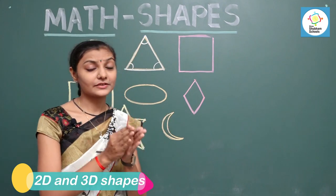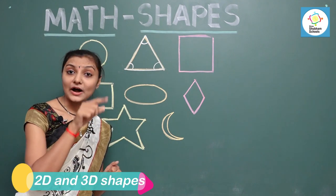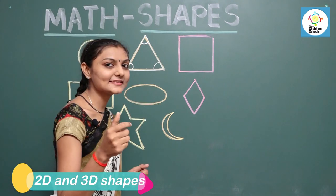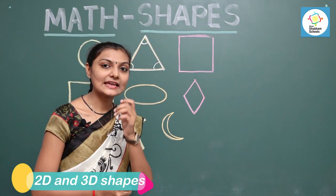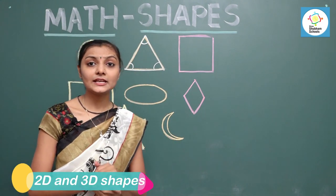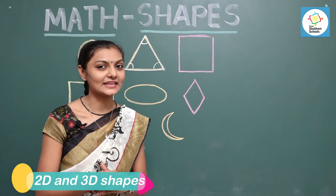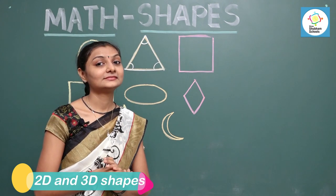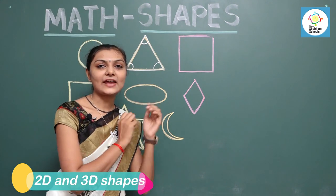There are many things which are in the shape of a triangle, like a mountain. Do you like pizza? Then a slice of pizza is also in the shape of a triangle. Take some more examples: a mountain, then many tables are also in the shape of a triangle.